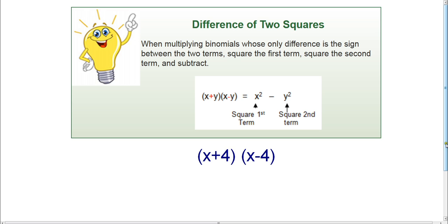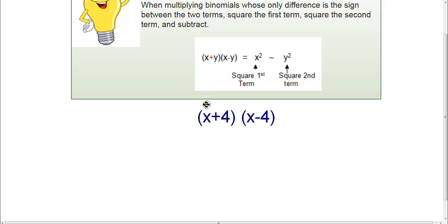So for example, the first term, if we use the same example, square the first term. So this is the first term, second term, first term, second term. So if we square the first terms, x² is x times x, which is x². And then square the second term. So the second term, just think of four and four. Four times four is 16. And it's always going to be a subtraction sign.